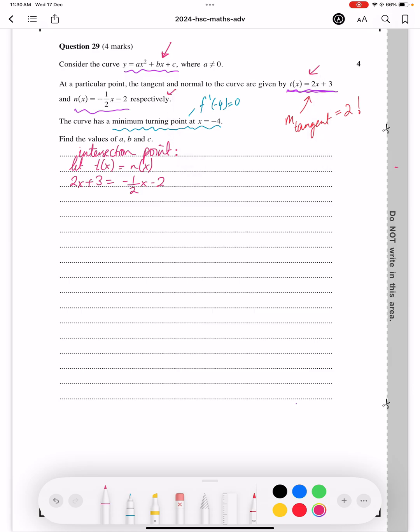We've plugged them into each other, we're going to solve. So we get 5 over 2x equals minus 5, that works out to be x equals minus 2. To find the y value, take x equals minus 2, plug it into the tangent equation, get y equals minus 1. Box this point, you're going to come back to it.